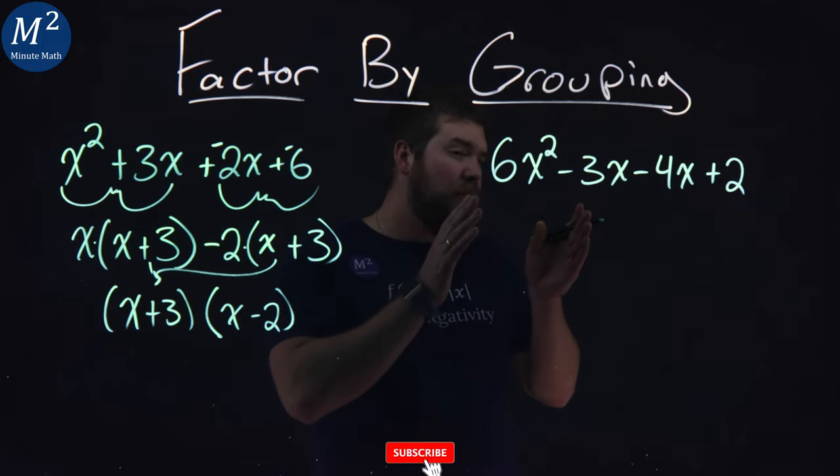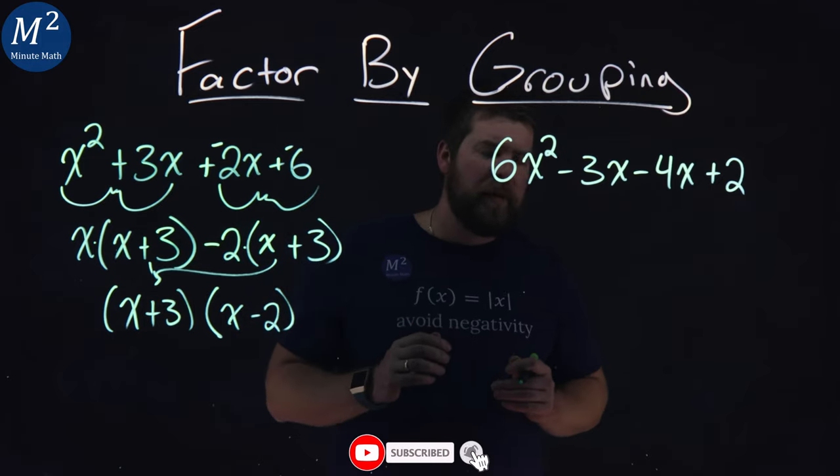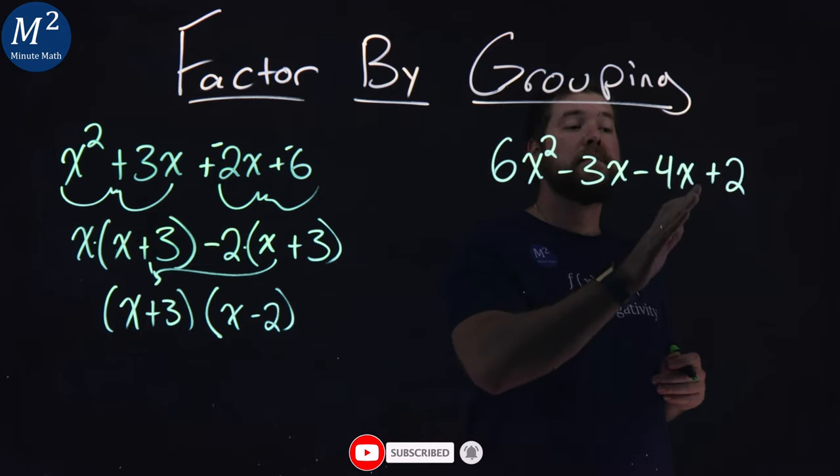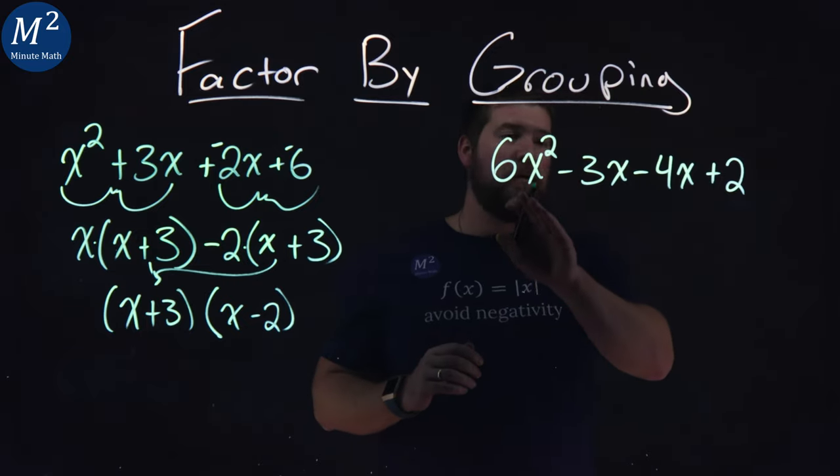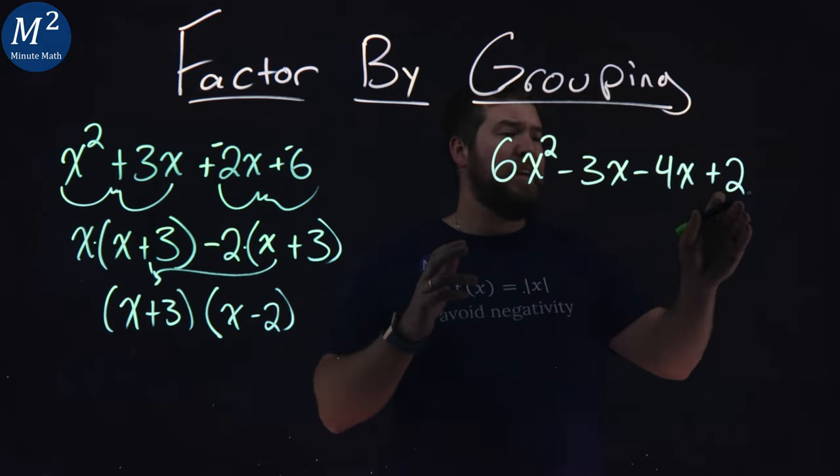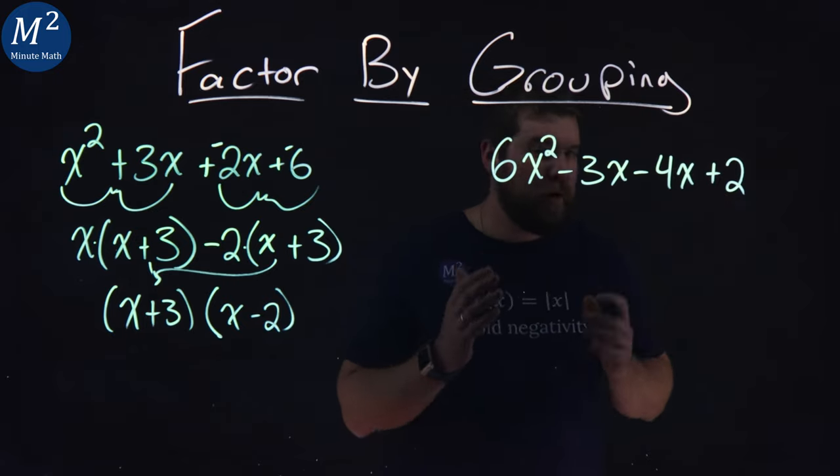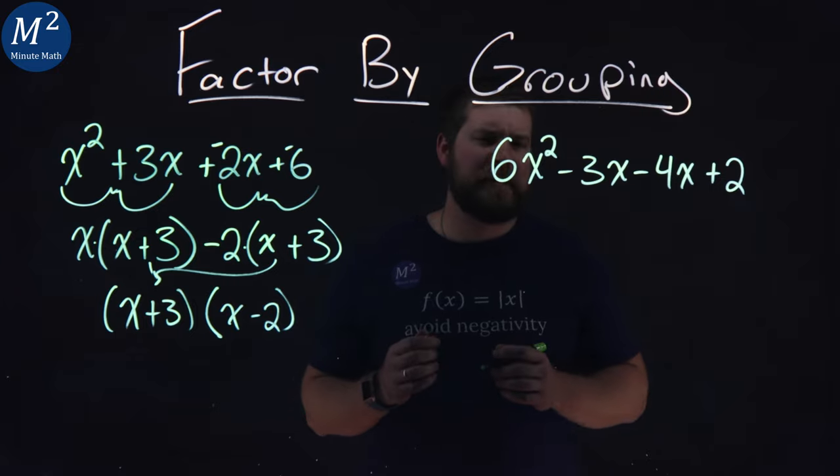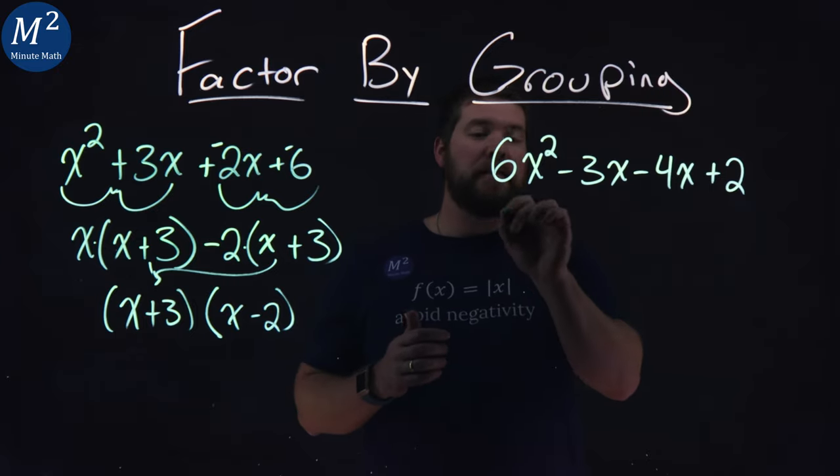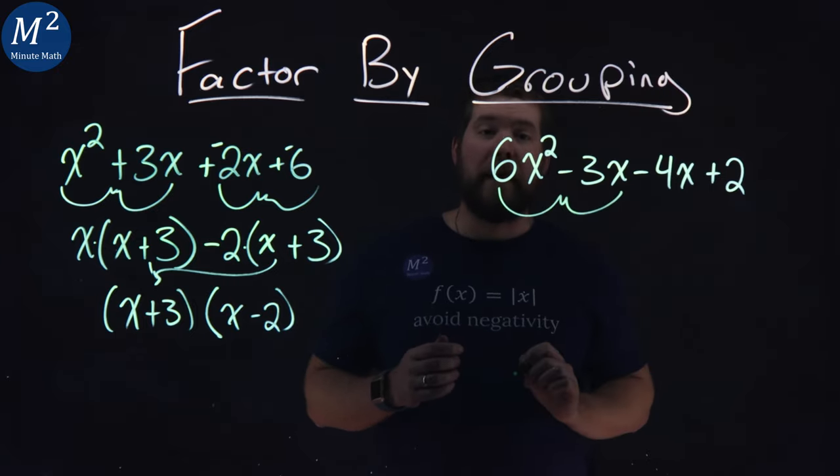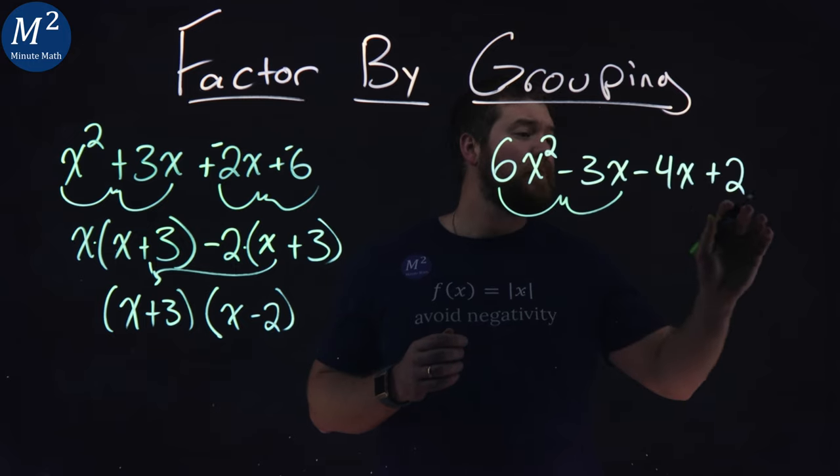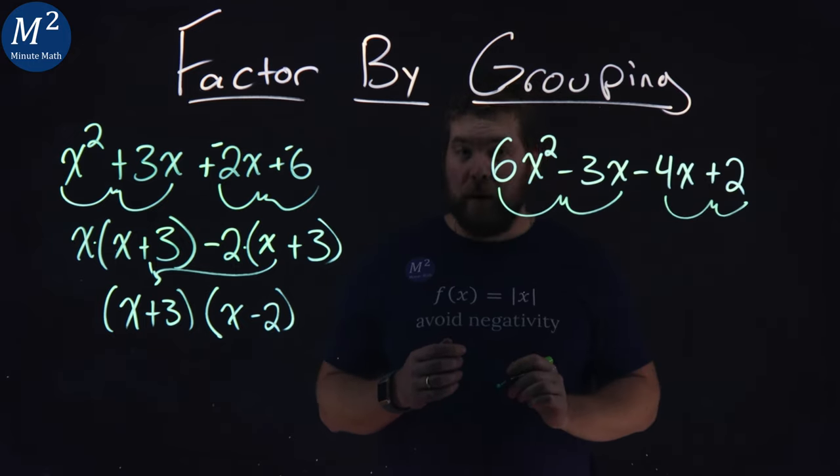All right, let's dive into our second example. We have 6x squared minus 3x minus 4x plus 2. And we notice that there's no greatest common factor in each part of this expression. So we're going to have to group it. We have 6x squared minus 3x. Let's group that. And we have minus 4x plus 2. And let's group that as well.